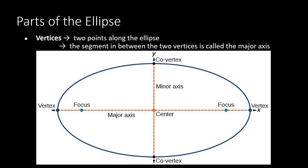The next part is the vertices — two points along the ellipse. We locate the vertices using the major axis. An ellipse has two axes: the major axis and the minor axis. The major axis refers to the bigger or longer axis. If the longest axis is the x-axis, then the x-axis becomes the major axis, and the vertices are located on it.